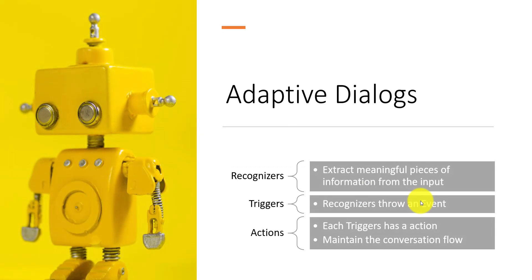In Adaptive Dialog, three basics are important: Recognizer, Triggers, and Action. The Recognizer understands your user input — like a LUIS model. If you give it text, LUIS will extract the intent and the entity of that text. Based on the intent or output from LUIS, your bot will work. The same concept applies here with the Recognizer — there are different types of recognizers available, and you can use LUIS as well.